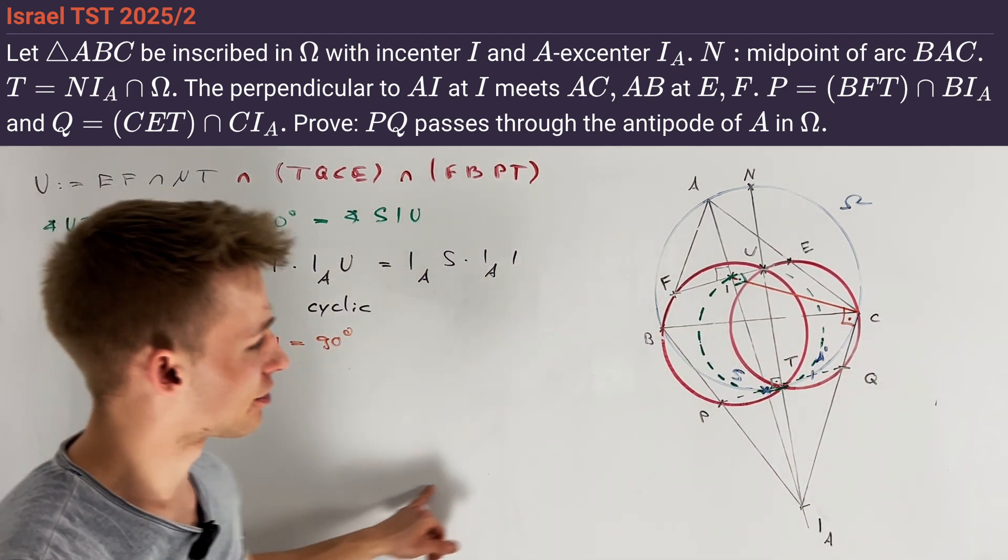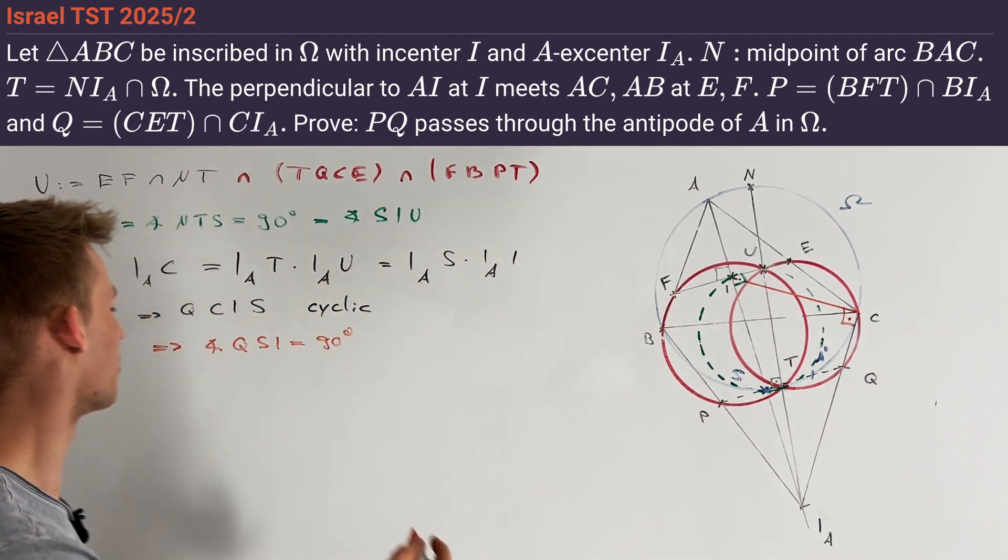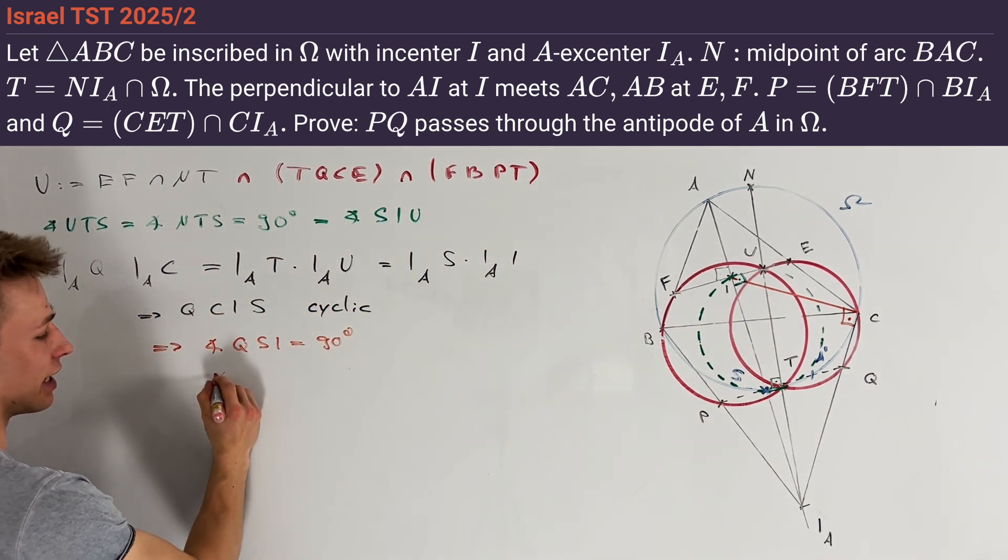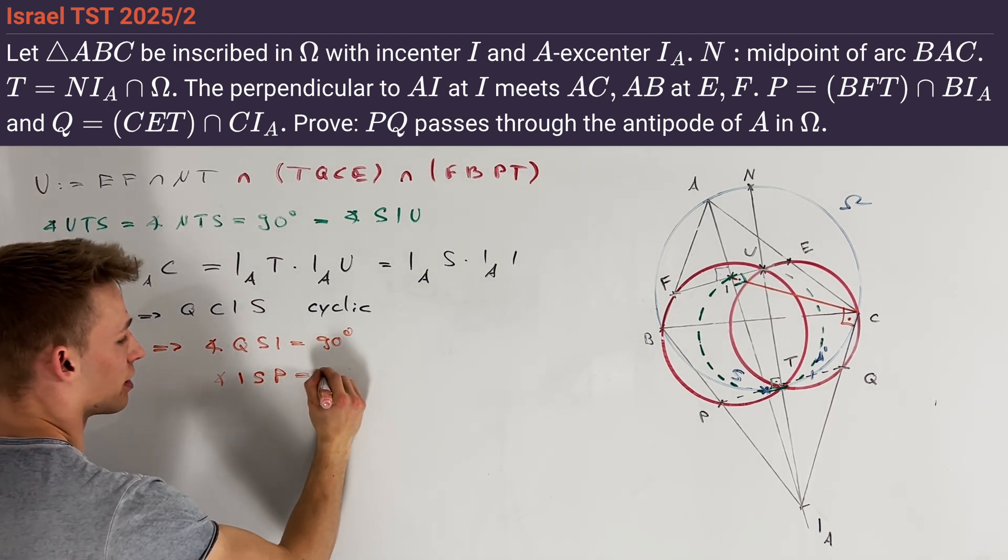In the same way, we can also get that PSIB is cyclic. And then we also get here that the angle ISP is also equal to 90 degrees.